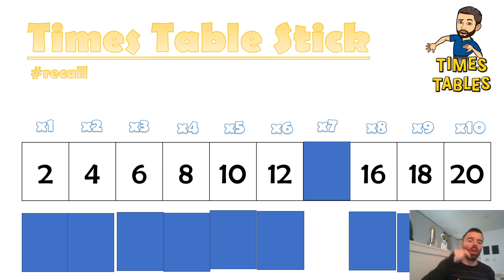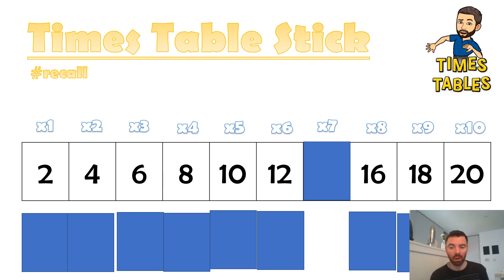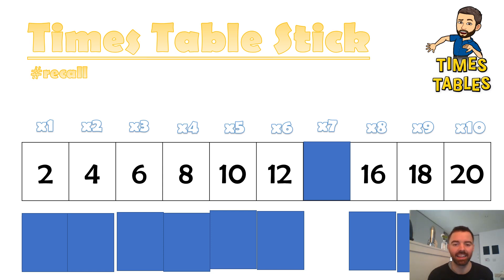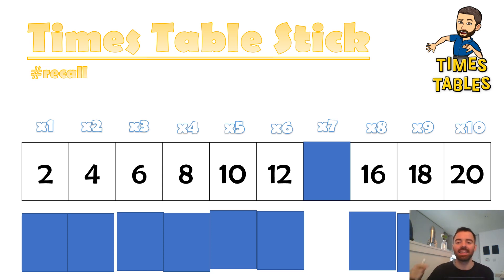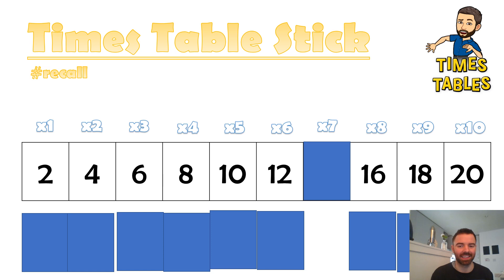Do we want to count up then? We've got two, four, six, eight, ten, twelve, sixteen, eighteen, twenty. Your turn: two, four, six, eight, ten, twelve, sixteen, eighteen, twenty. Can we go back down? Start at twenty: twenty, eighteen, sixteen, twelve, ten, eight, six, four, two.